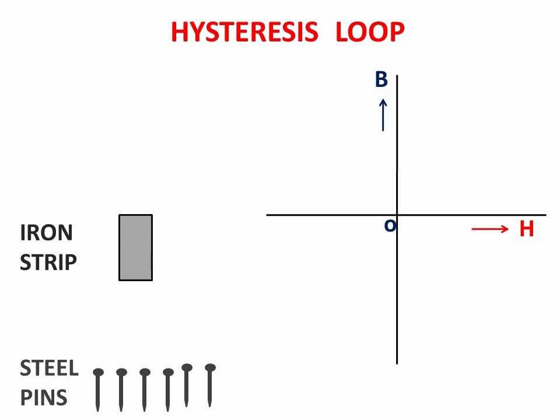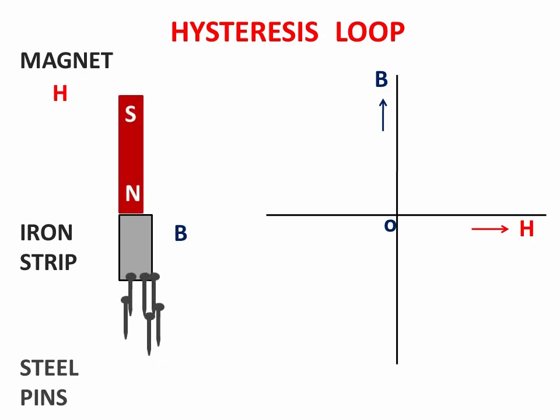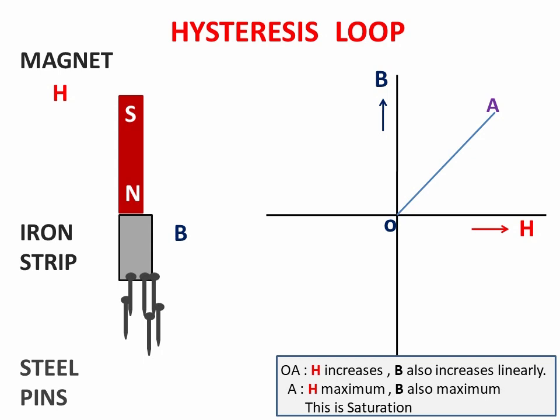The iron strip is moving towards the steel pins, but since it does not have magnetic property, it does not attract the pins. A bar magnet is then moved towards the iron strip, which becomes a magnet because the applied magnetic field H induces a magnetic field B inside the iron strip. When the bar magnet touches the iron strip, all the pins are attracted — it attains maximum attraction, called saturation, shown as point A on the BH curve. At A, H is maximum and B is also maximum.